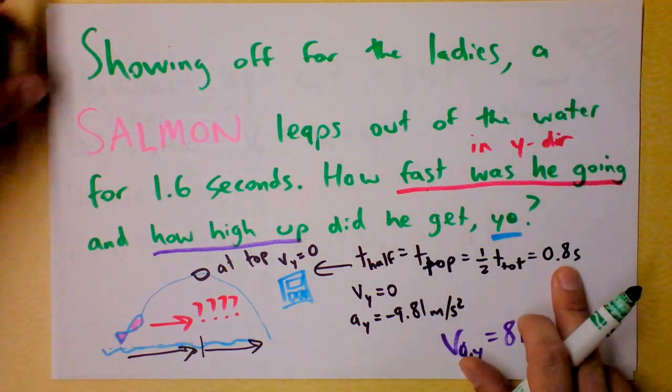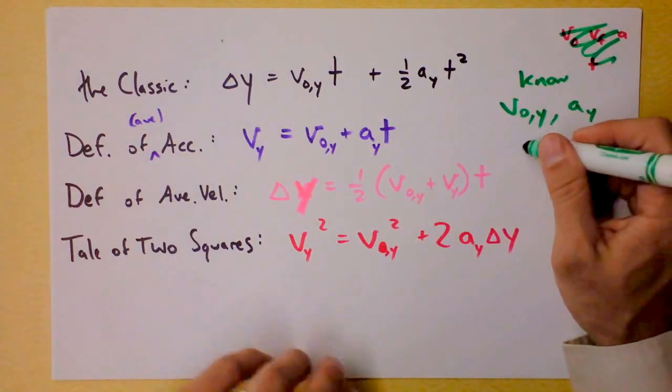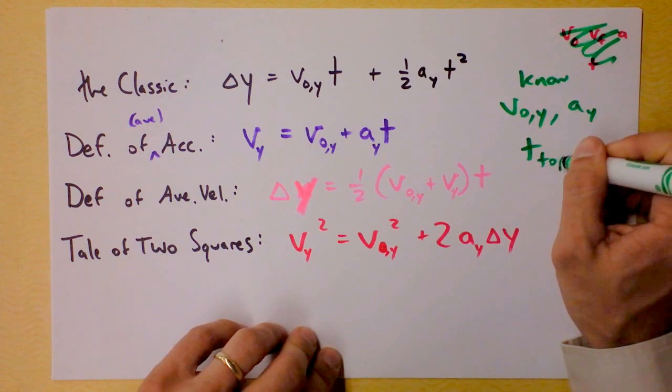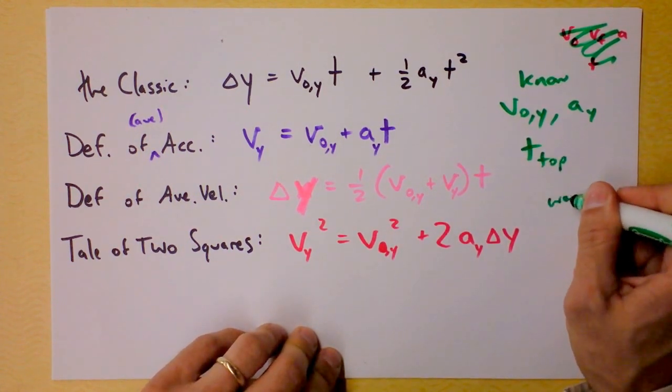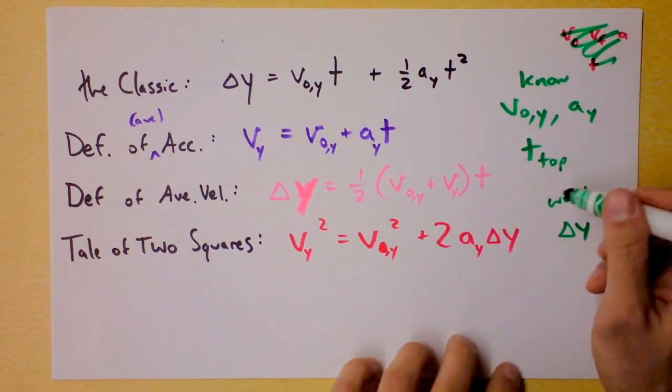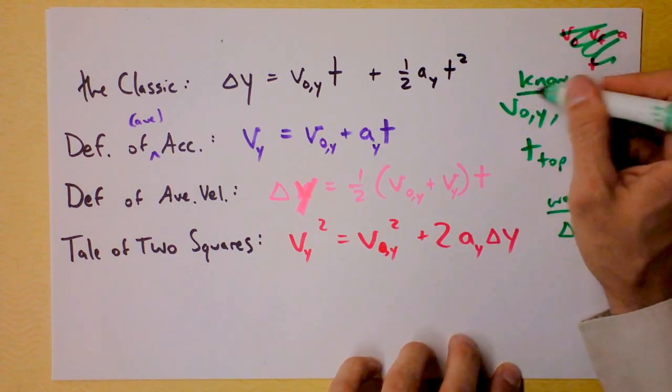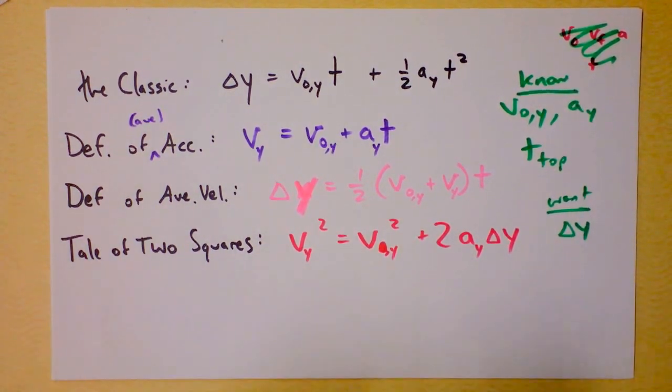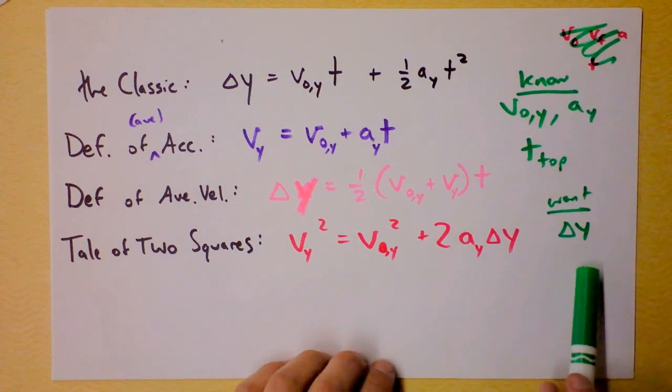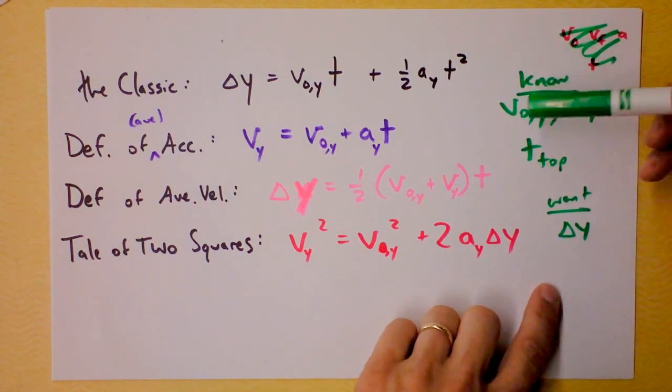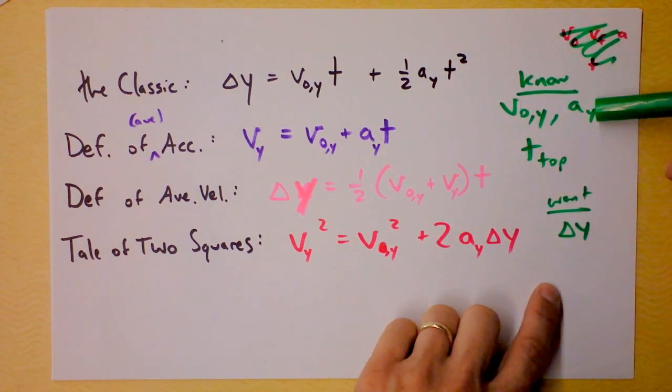That's the time at the top, which is 0.8 seconds. So we know time at the top, and we want delta y. We want to know how high up the salmon is at that moment. So let's see if there's an equation with delta y in it that also has initial velocity in the y direction, a sub y, and t at the top.